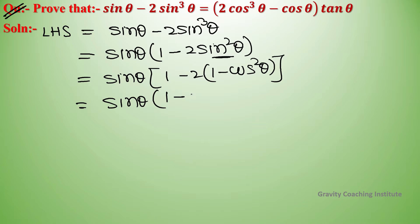This simplifies to sin theta times 2 cos square theta minus 1. Now we introduce tan theta by manipulating the expression so we can write it in terms of tan theta.